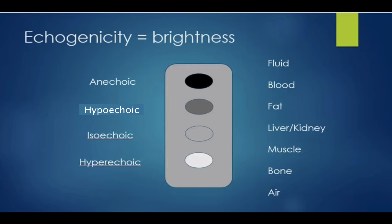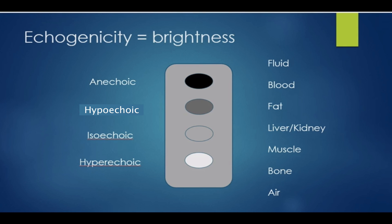The images generated in ultrasound are in grayscale. When something is black, we call it anechoic, meaning there are no echoes reflecting back to our probe. Hypoechoic means darker, while isoechoic means gray. Hyperechoic means lighter and whiter. Different organs and tissues in the body will reflect or absorb sound differently, resulting in different echogenicity or brightness of tissues reflected on the screen. Fluid is often black or anechoic because sound travels so well through liquid that very little of it actually reflects back to the probe. Sound travels very poorly through air, which is why almost all of the sound waves will reflect back to the probe, making air appear bright white. Different densities of tissues will reflect sound differently, creating a grayscale image on the screen.